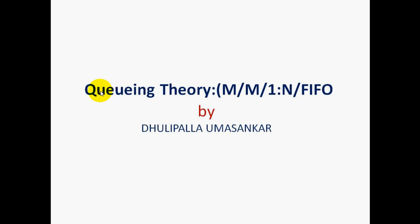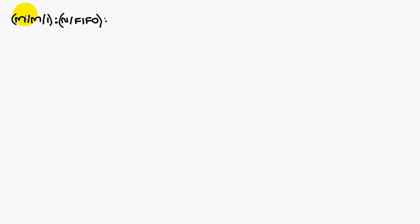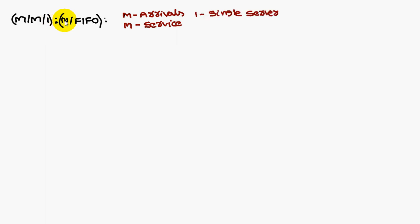We are going to discuss queuing theory, single server and finite queue length. Here the first M stands for arrivals and the second M stands for service, and one stands for single server. Similarly, N stands for finite queue length. This is first in first out.